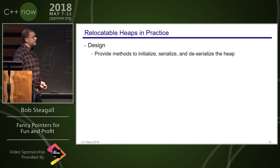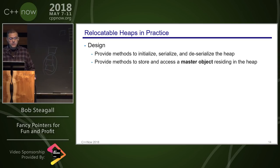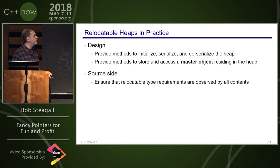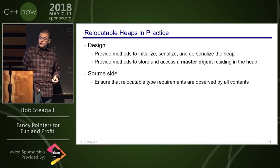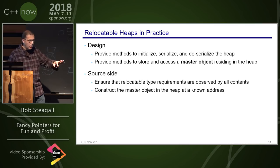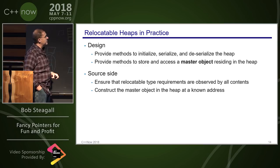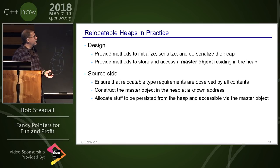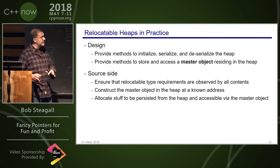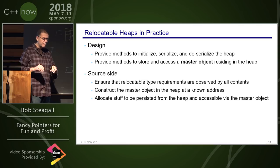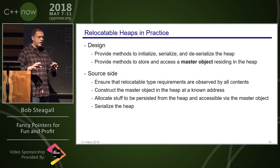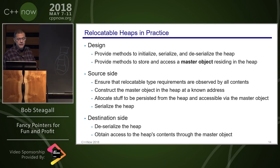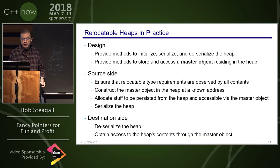In practice, you'd provide methods to initialize, serialize, and deserialize the heap, and methods to store and access a master object that resides in the heap. On the source side, ensure relocatable type requirements are observed, construct the master object at a known address in the heap, allocate persisted data from the heap accessible via the master object, then serialize the heap. On the destination side, deserialize it and access contents through the master object.